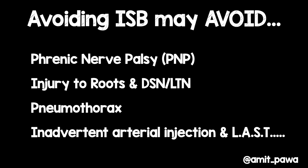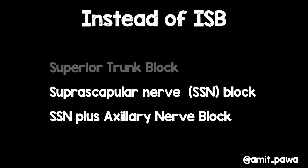Now we'll very briefly look at the suprascapular nerve block, the axillary nerve block, and the distal nerves of the arm. Why might it be useful to avoid doing an interscalene nerve block? It may be useful to reduce the incidence of phrenic nerve palsy, reduce the chance of injury to the nerve roots and to the dorsal scapular nerve and long thoracic nerve hidden within the middle scalene muscle, reduce the risk of pneumothorax, and possibly avoid local anaesthetic systemic toxicity and arterial injections. If you don't perform an interscalene nerve block, options include the suprascapular nerve block, suprascapular plus axillary nerve block, or a posterior cord injection for the infraclavicular brachial plexus.